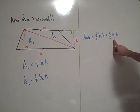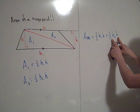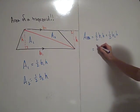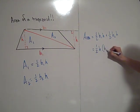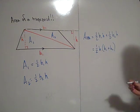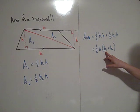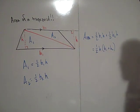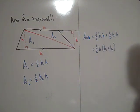You can factor this because each of these two terms shares a common factor of 1 half H. Factor that 1 half H out, you're left with 1 half H times the quantity B1 plus B2. This is the area formula for a trapezoid. As long as you know the lengths of the bases and the height of the trapezoid, calculating the area is quite simple. It comes from finding the areas of each of these two triangles and adding them together.